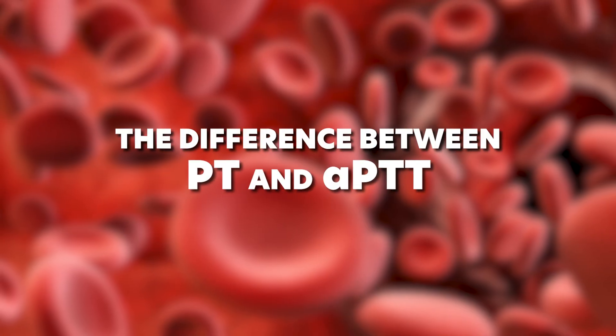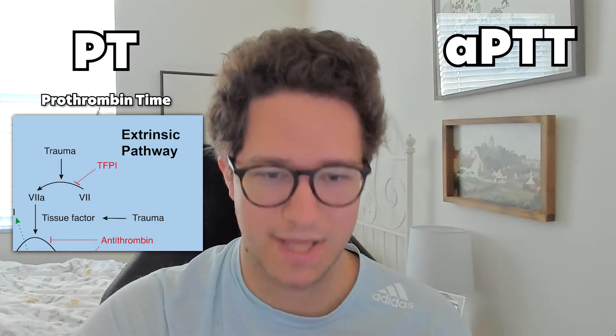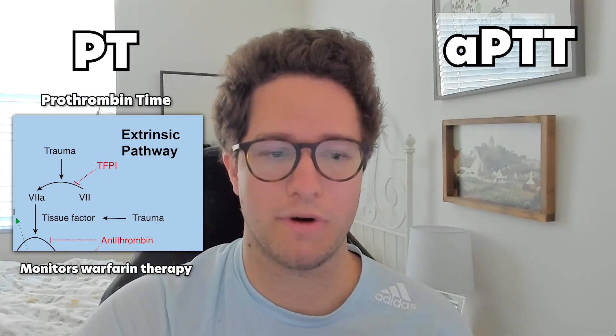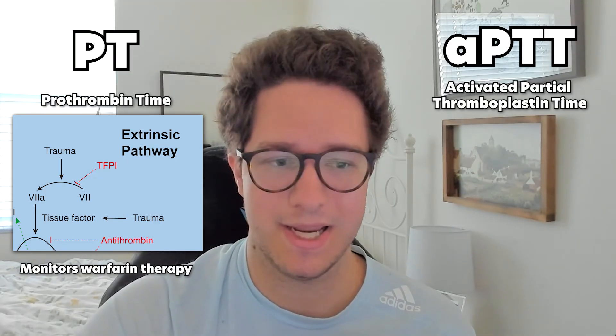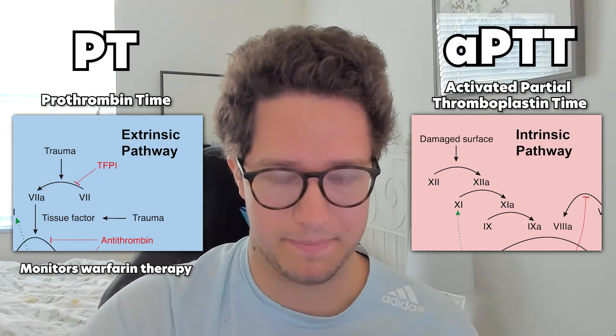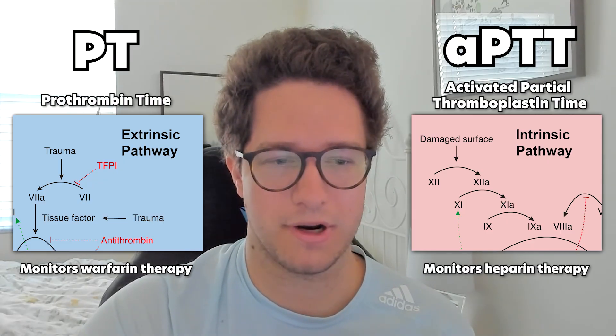One of the hardest things when learning this is differentiating between PT and PTT, so here's a quick learning tip. Prothrombin time, or PT, equals the extrinsic pathway — it measures mainly factor 3, which is tissue factor, and factor 7, and is used to monitor warfarin therapy. The activated partial thromboplastin time, or PTT, equals the intrinsic pathway — it measures factors 9 through 12 and is used to monitor heparin therapy.